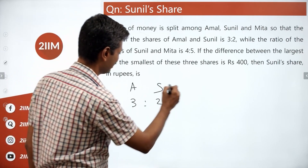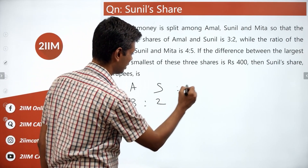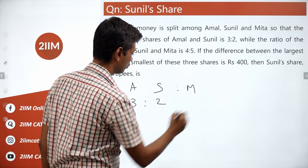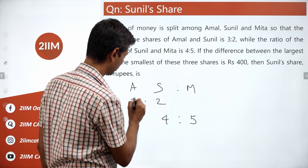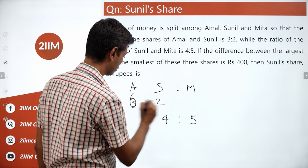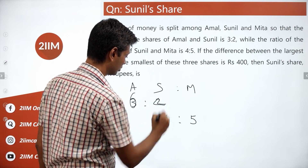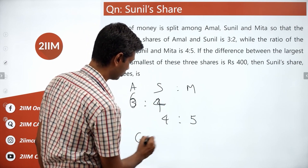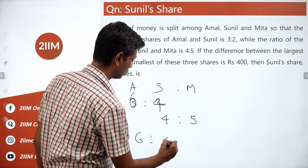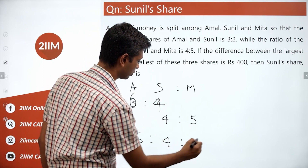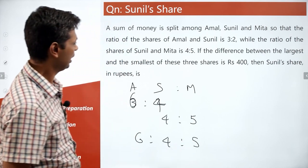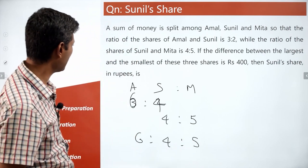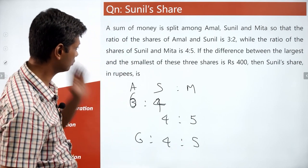To combine the ratios, I want to write this as 6:4:5. So the combined ratio is 6 is to 4 is to 5. The difference between the largest and smallest of these three shares is ₹400.